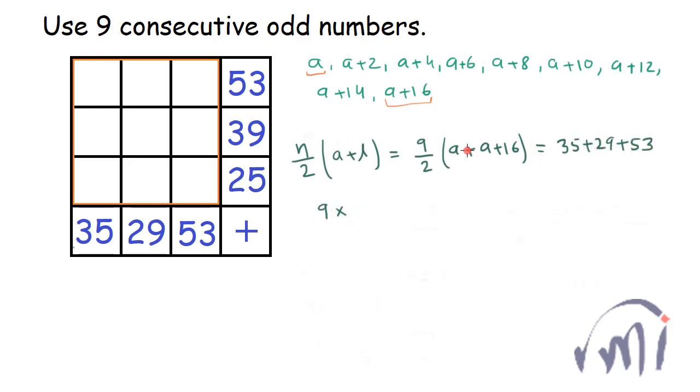So 9 multiplied by this will be 2A plus 16. So I can take 2 common, and inside the bracket I'll have A plus 8, divided by 2, is equal to 9 plus 5 is 14 plus 3 is 17. So 117.